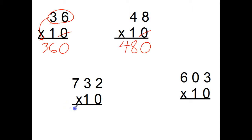732 times 10, write down my 732, add a zero to the end, count over 1, 2, 3 places for my comma. 7320.